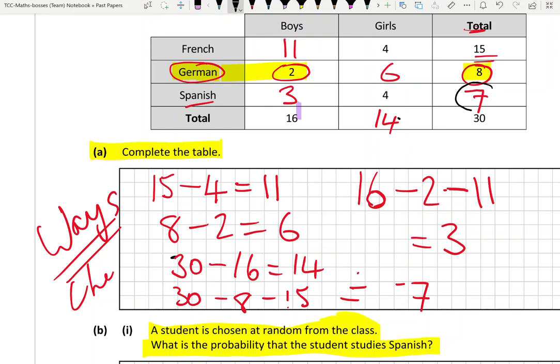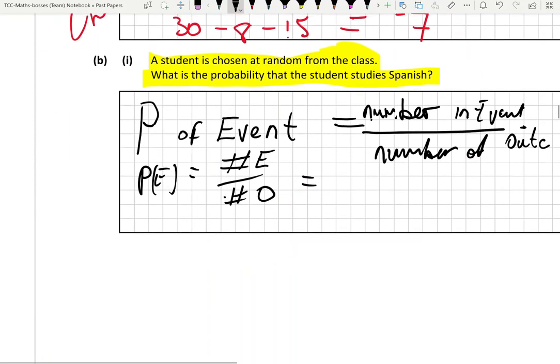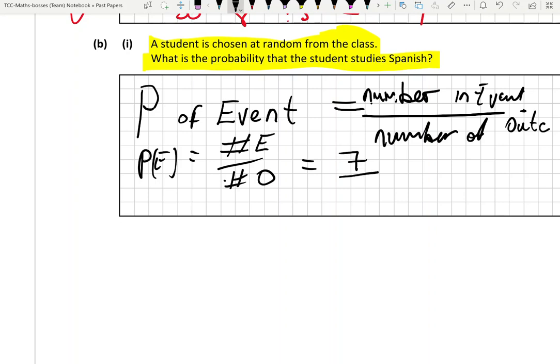We need to know how many students study Spanish. The total number of students that study Spanish is 7, because I'm going straight across from Spanish and down through the totals. So the answer is a fraction: 7. The total number of students in the class is 30. That's the answer: 7 over 30.